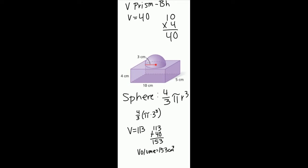First we will find the volume of the rectangular prism: b times h. And we get 40.